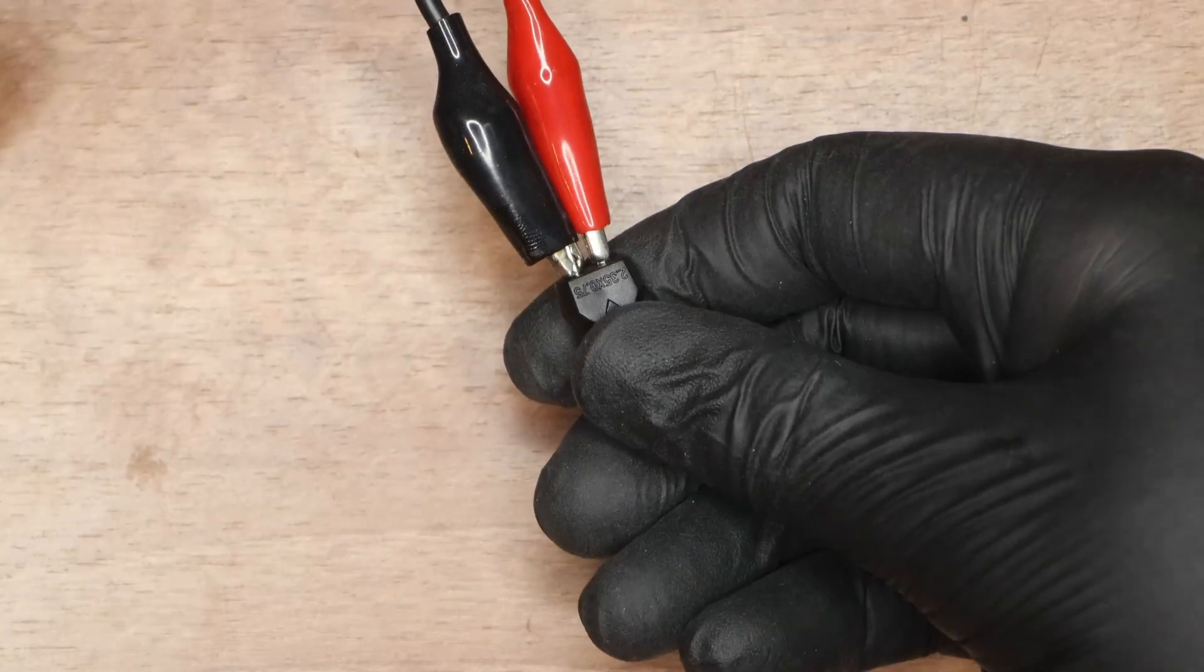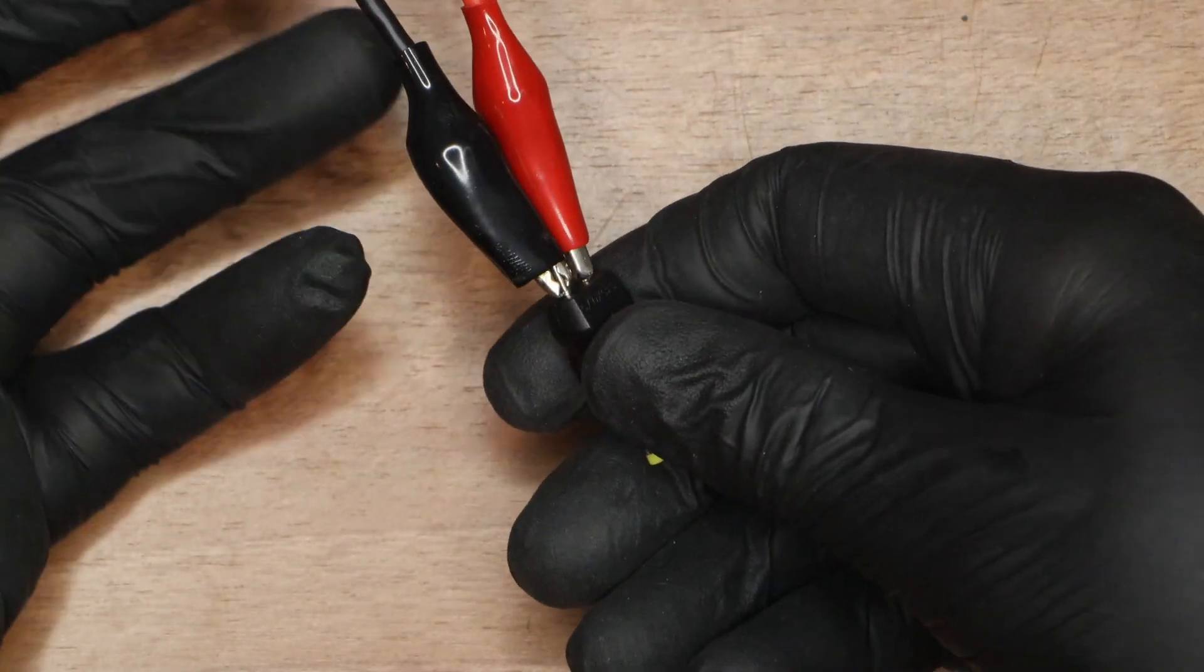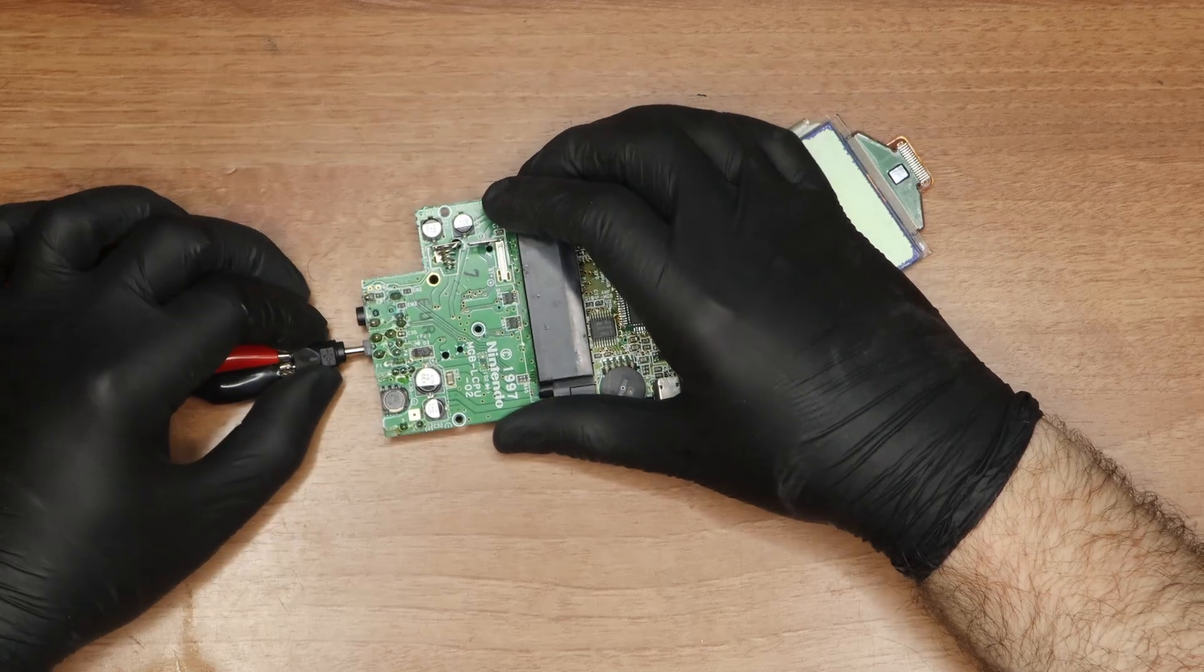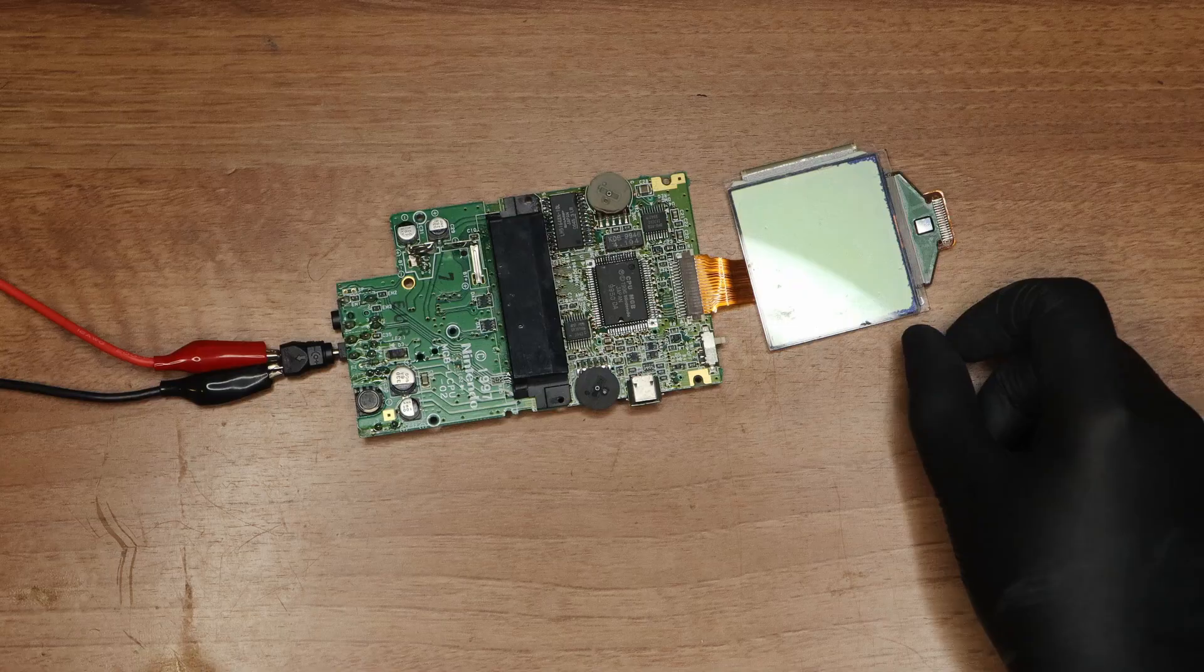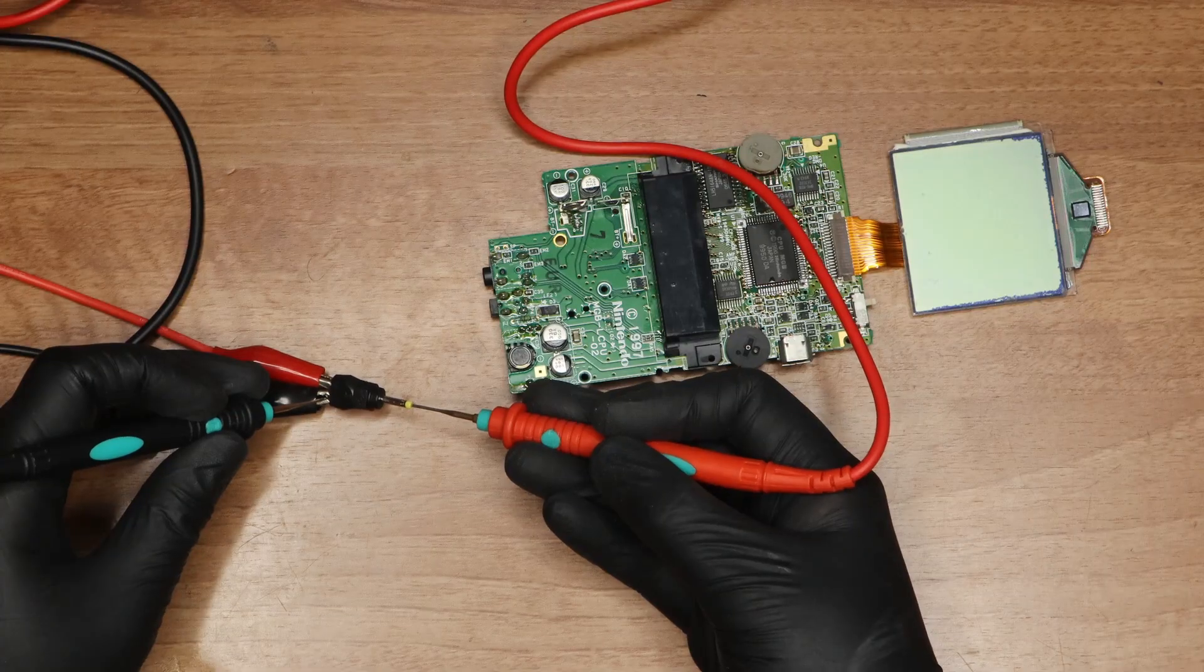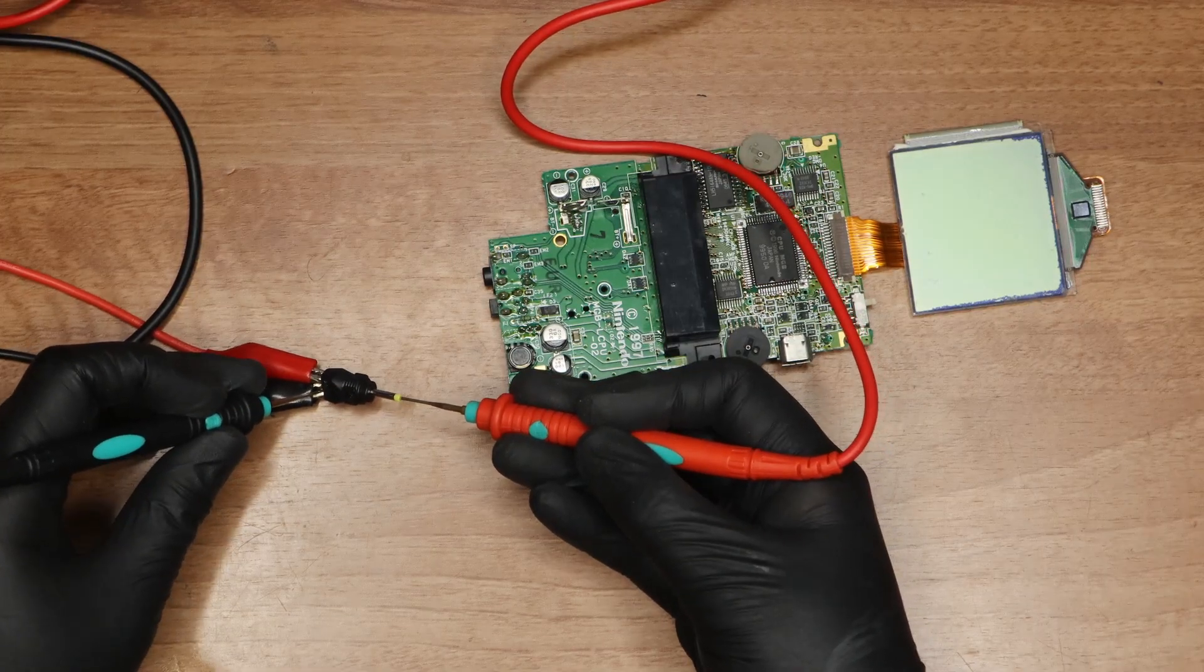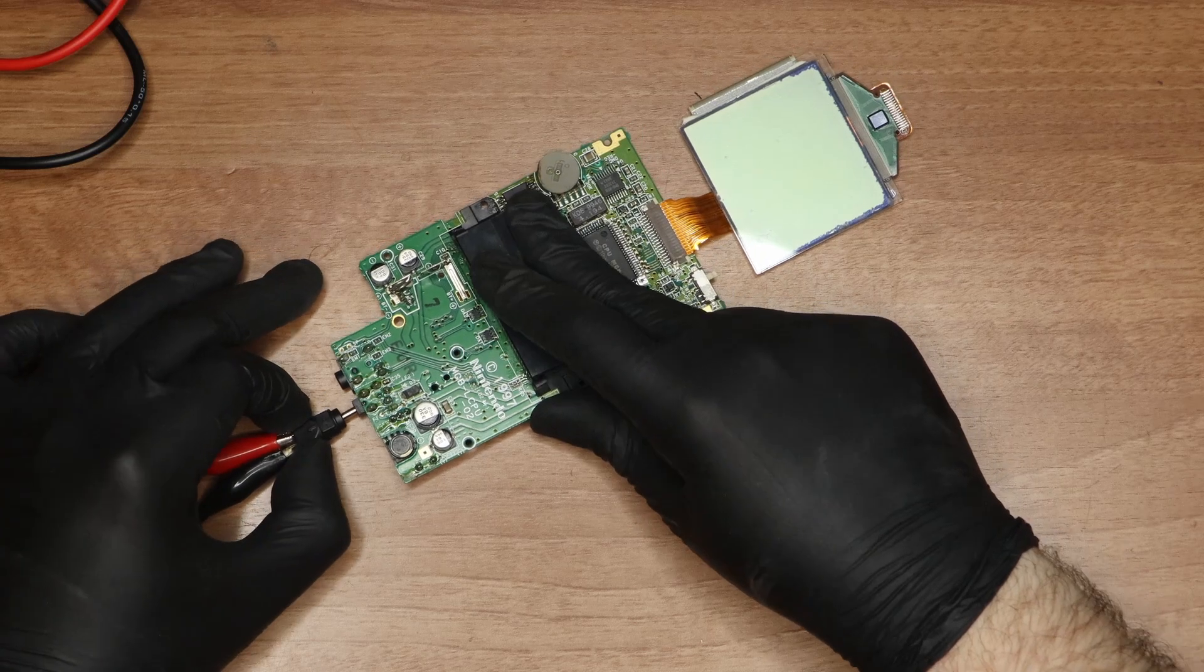This type of connector is janky. The crocodile clips easily come loose or cause shorts. After wiring it, you can insert it and power on your device. Well, here's a cautionary example. Accidentally wired it backwards. Interesting to have caught this on camera, it was just going to be a warning.